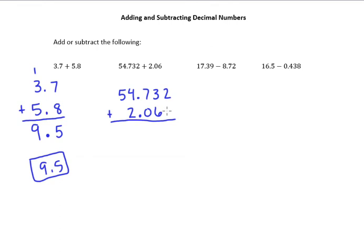As long as your place values are lined up, you're going to be fine. So 2 plus 0 is, of course, 2. 3 plus 6 is 9. 7 plus 0 is 7. And I kind of went out of order from what I just said. I said to put the decimal point down there first, and I probably should have done that, but I drop it straight down now. And then 4 plus 2 is 6. And then 5 plus 0 is 5. So our answer is 56.792.